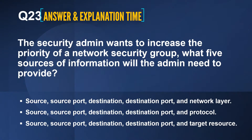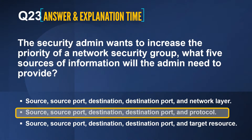The correct answer is Option 2. The information the admin needs are Source, Source Port, Destination, Destination Port, and Protocol. Network Layer and Target Resource are not needed. NSG security rules are evaluated by priority using five information points — Source, Source Port, Destination, Destination Port, and Protocol — to either allow or deny the traffic.